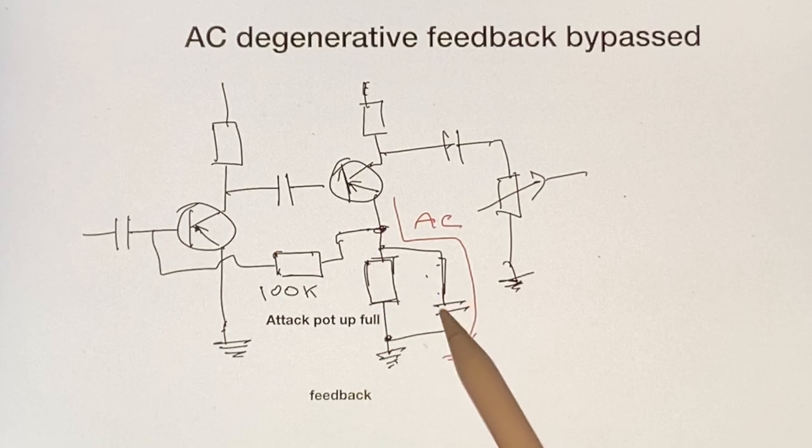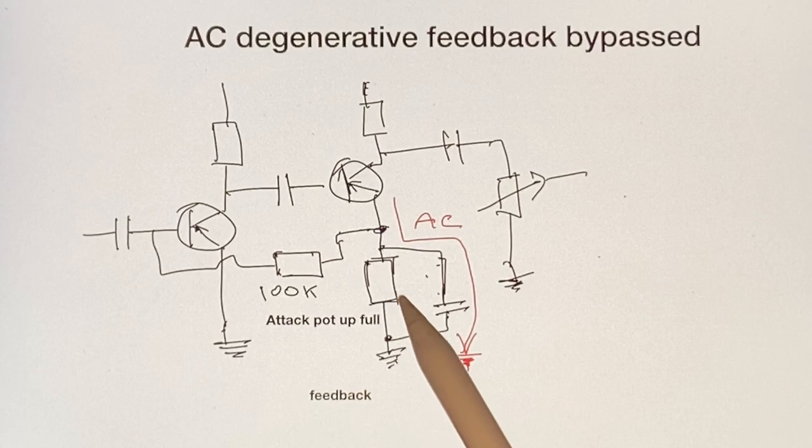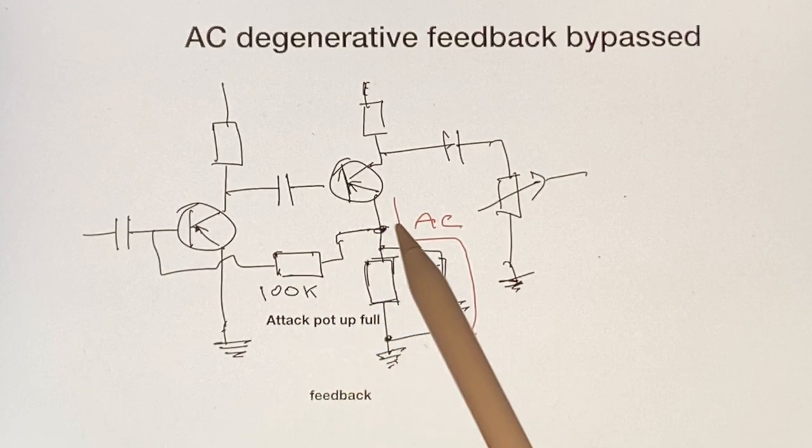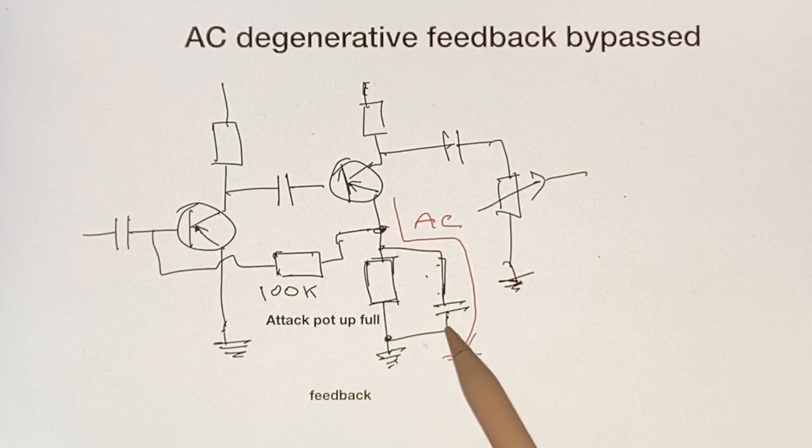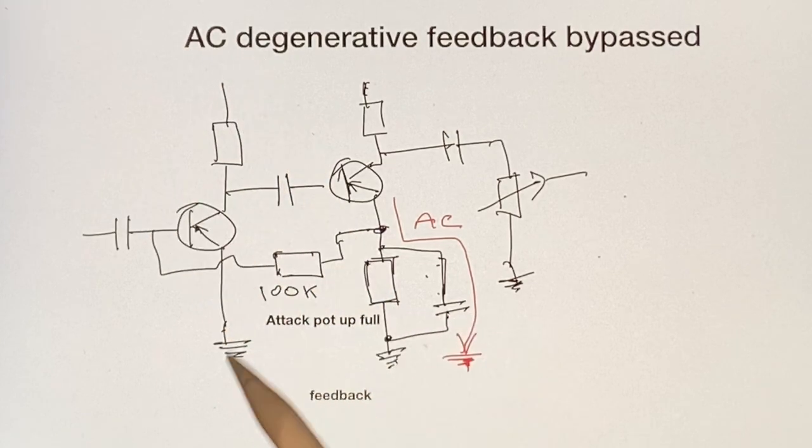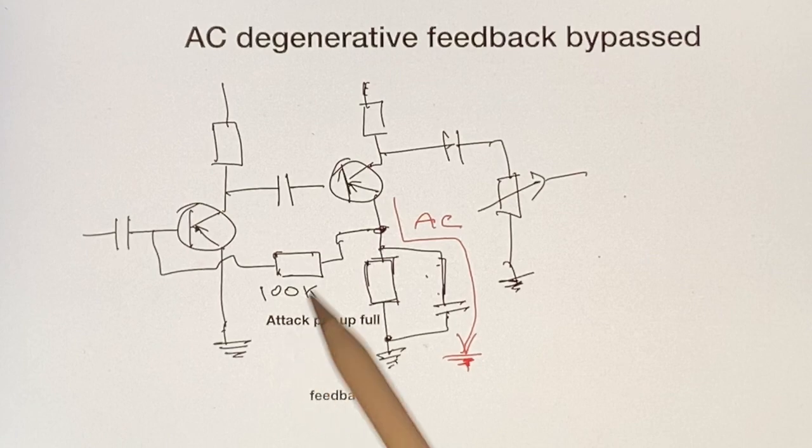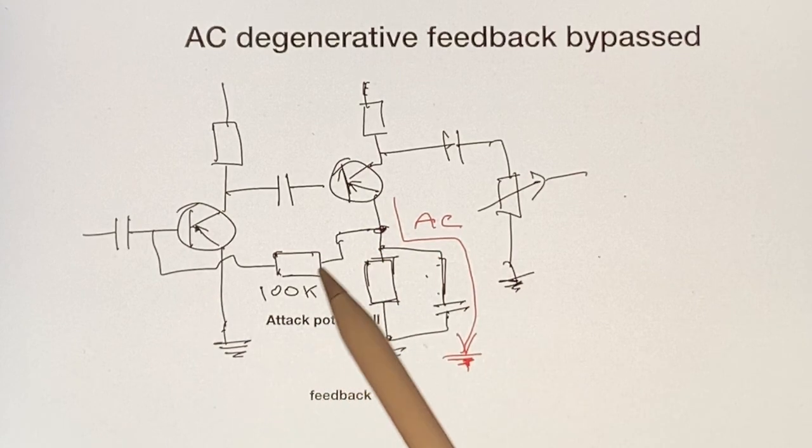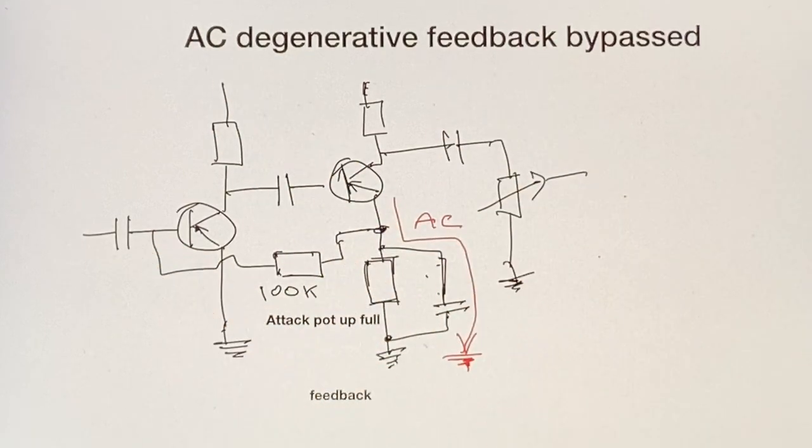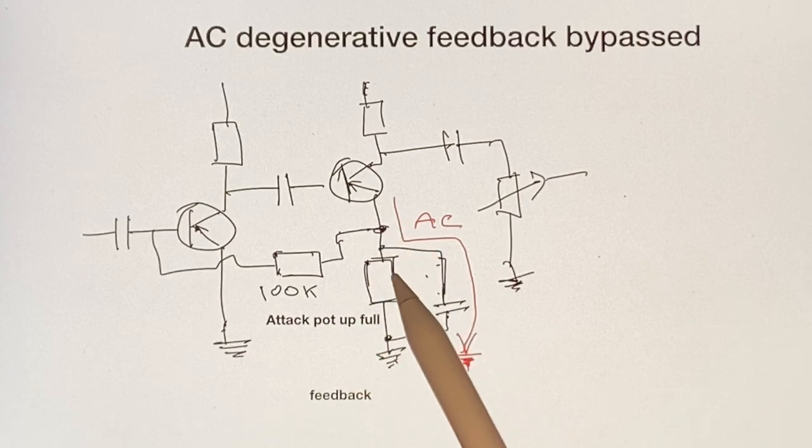When the pot is at full up, this is the type of circuit you actually have. In this case, the AC feedback through this 100k is hugely reduced because it has an easier path straight through this capacitor to ground. So this does not do very much at all to the AC signal in this case. There is not a lot of AC negative feedback going back through here.